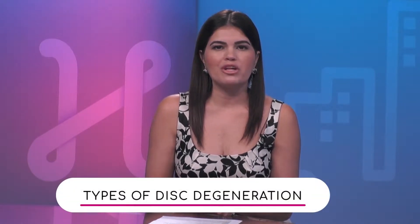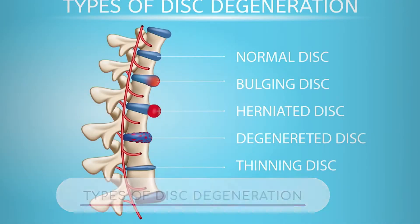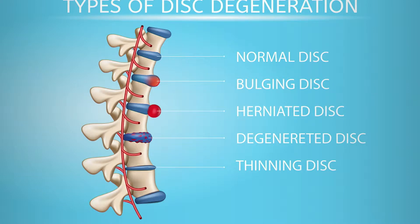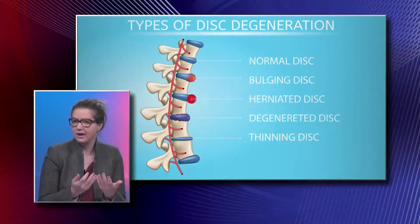When it comes to spinal discs, there are quite a few conditions that could occur, and we have a graphic here which illustrates some of them. A normal disc looks nice and smooth. A bulging disc versus a herniated disc is a difficult distinction. Bulging essentially means there is some tearing in the annulus fibrosis and some of the disc has bulged out.